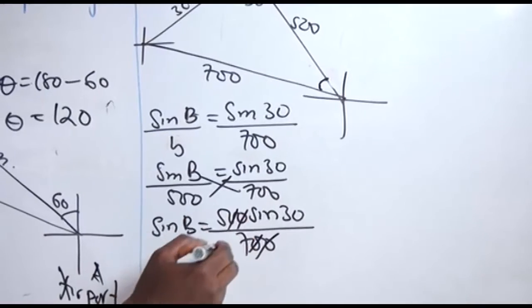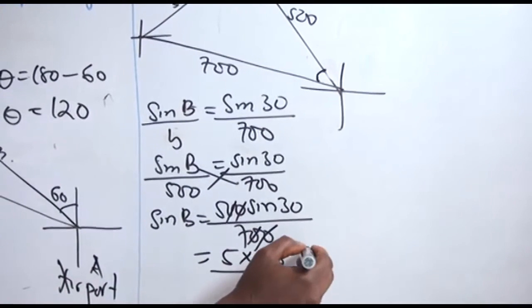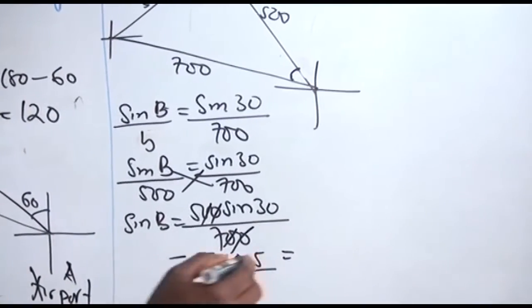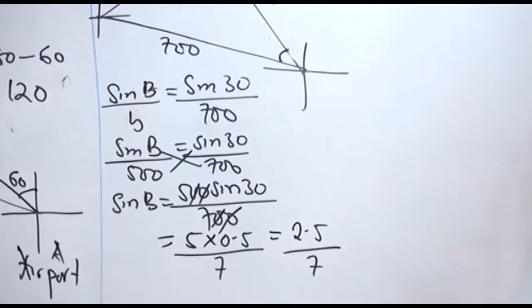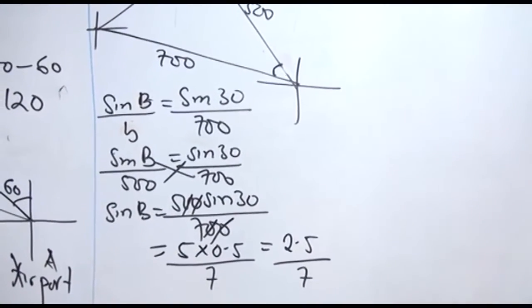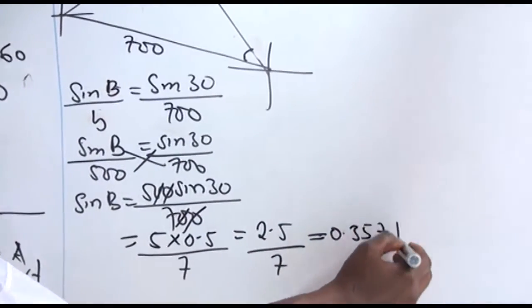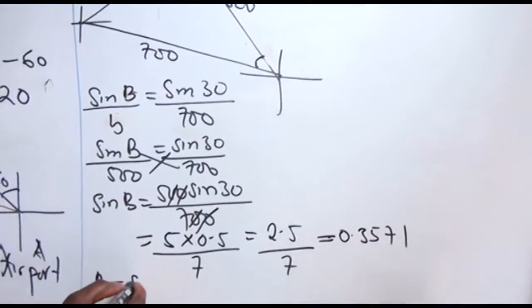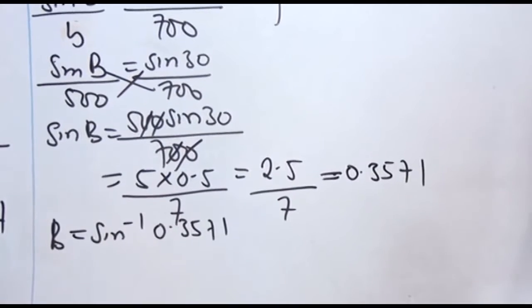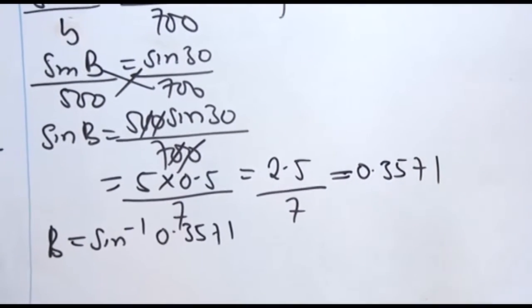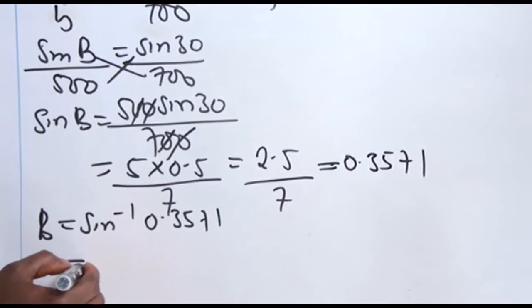So cancel, cancel, cancel, canceled. Then we have 5 times 0.5 over 7. So we want to have 5 times 0.5 is going to be 2.5 over 7. Then 2.5 divided by 7 gives us what is 0.357. They will now act it. Sine inverse of 0.357. Sine inverse is 0.357, 6, 5, 7.